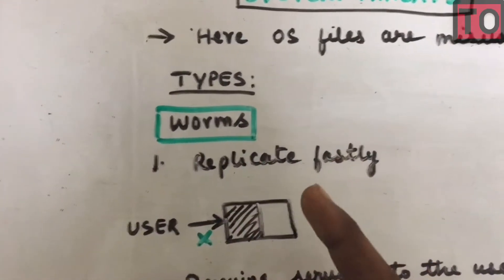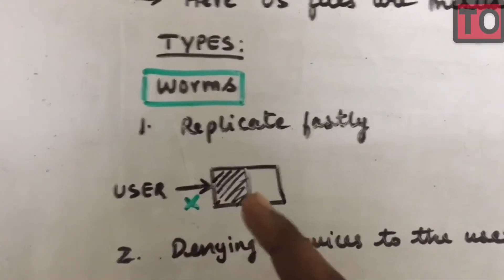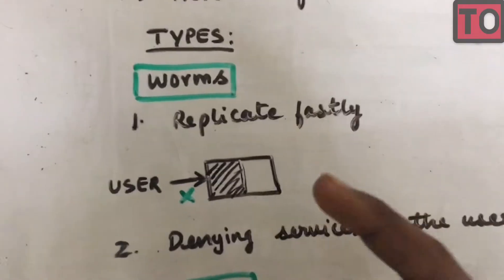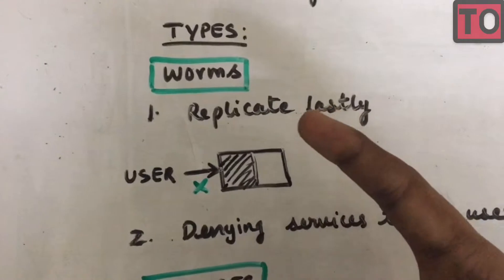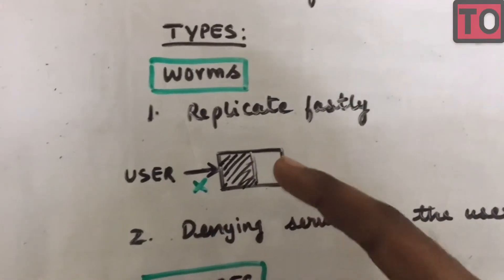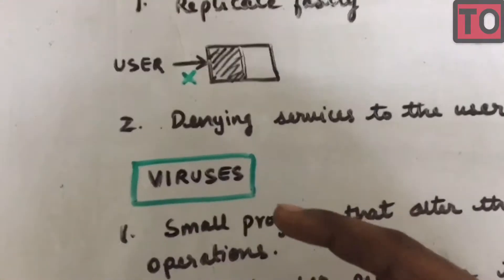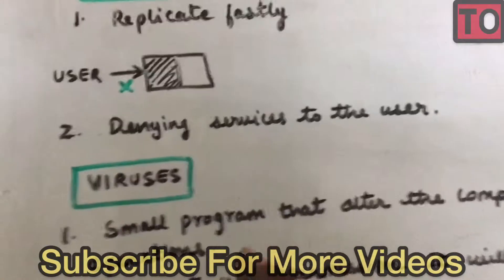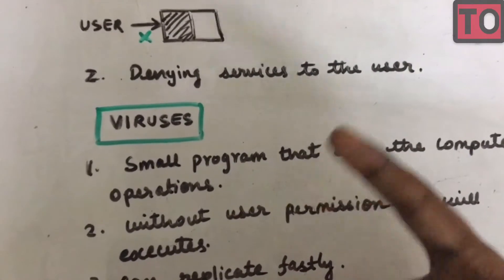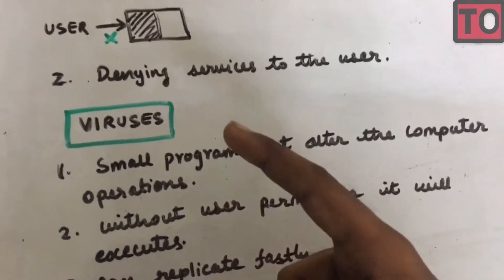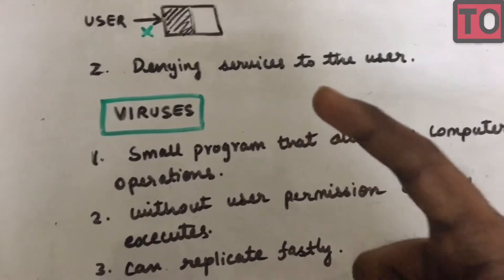The second point is denying services to the user. When you are doing a task on an OS, you will be successful but you will be affected by the worms and you will be denied. Type 2 is Viruses — small programs that alter the computer operation. You alter the computer performance.